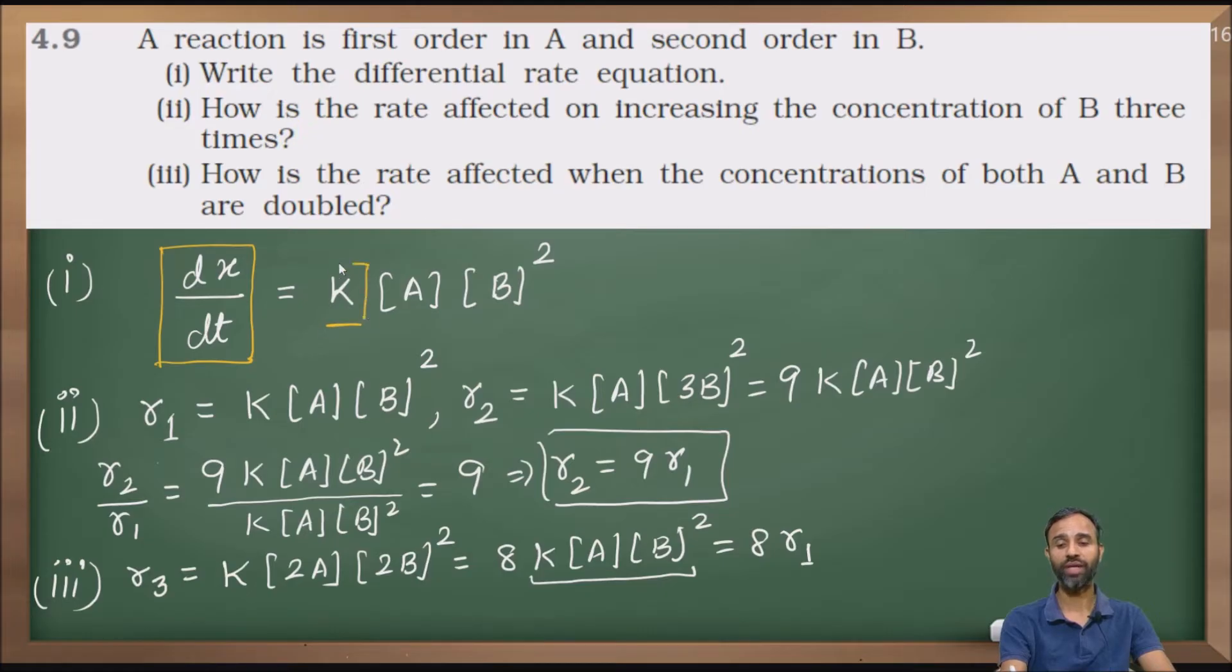That is equal to rate constant K and then concentration of A into concentration of B. Concentration of A raised to power 1 because it is first order in A and B raised to power 2 because second order in B. This is the solution of the first question.